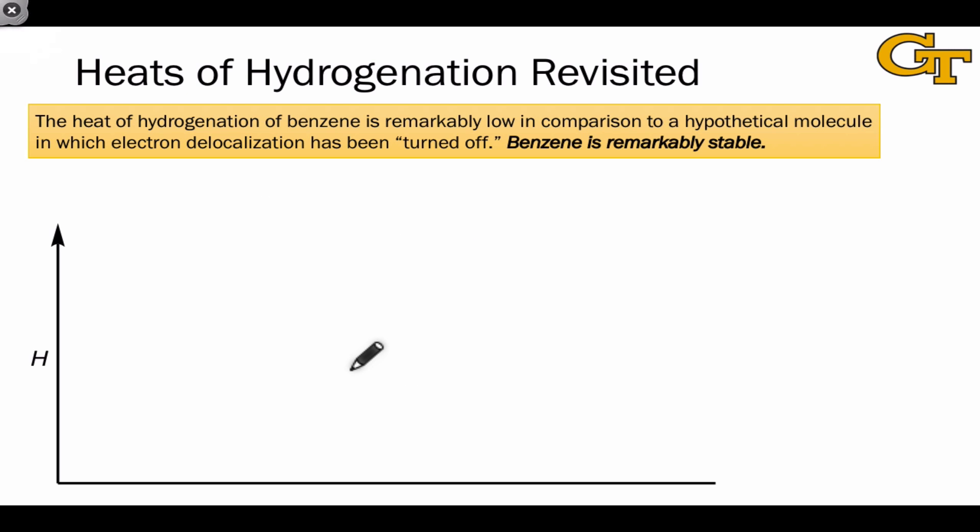There's a bit of an argument here that we have to make because the hypothetical molecule that we want to compare to benzene is not a real molecule. This cyclohexatriene with distinct double and single bonds is not a real molecule. But we can still estimate its would-be enthalpy or heat of hydrogenation. And here's how.